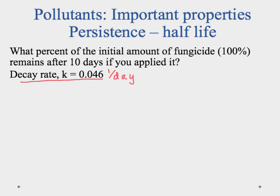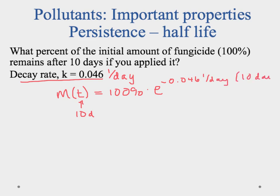We want to know how much is left after 10 days. So m at time t, where t equals 10 days, equals the initial amount — 100% — times e to the negative k (0.046 per day) times 10 days. If you do the math, you end up with 63% remaining.